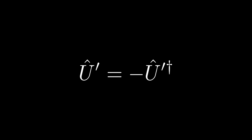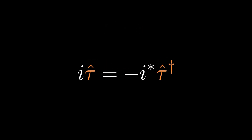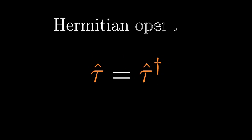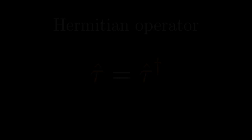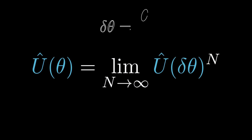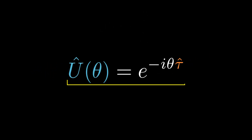Provided delta-theta is not 0, we can conclude U-prime equals minus U-prime-dagger. If we set U-prime to i-tau, then tau is always Hermitian. Hence, for very small changes of the state, we can write the unitary operator as I plus i-tau delta-theta. The minus sign is by convention. An appreciably large change is achieved by a large number of small changes. Using delta-theta equals theta over n and the definition of the exponential function gives the final result: U of theta equals e to the minus i theta tau.